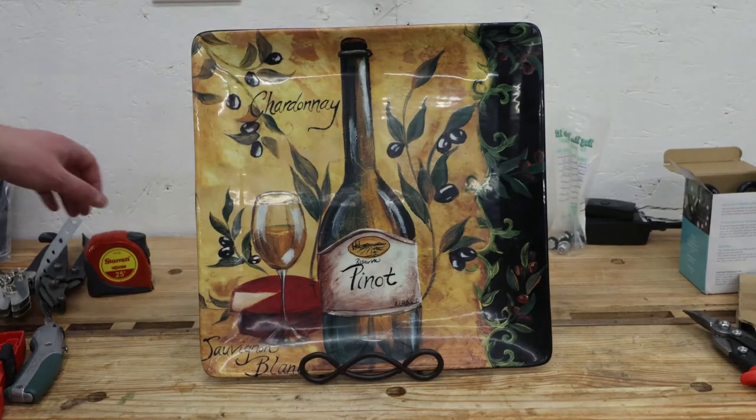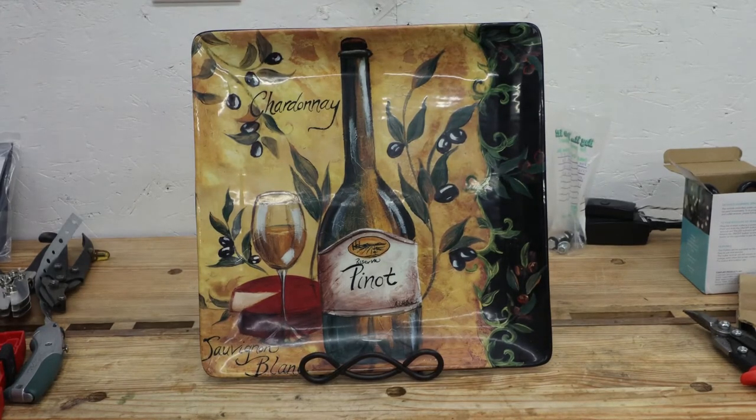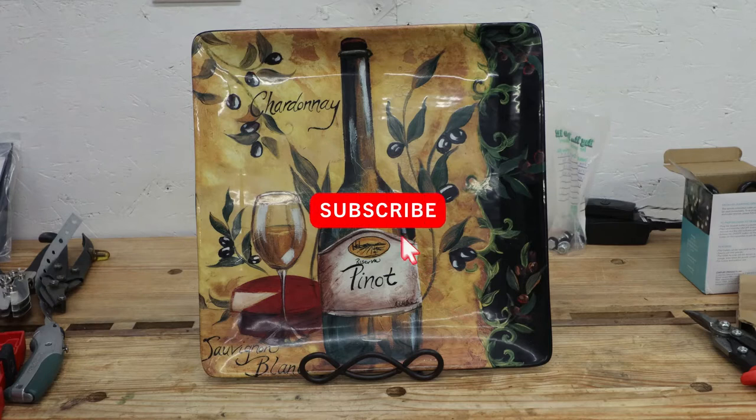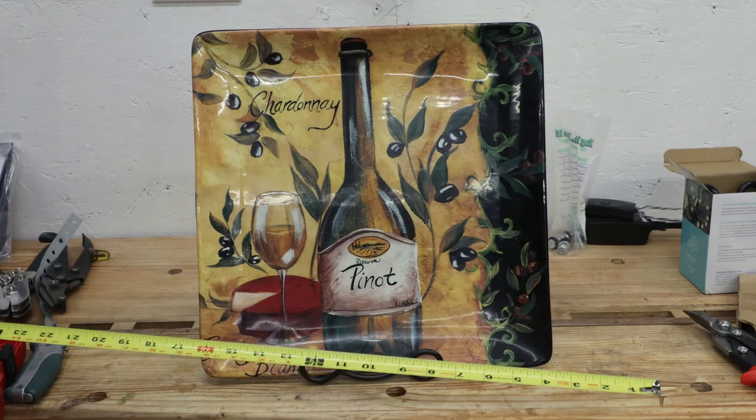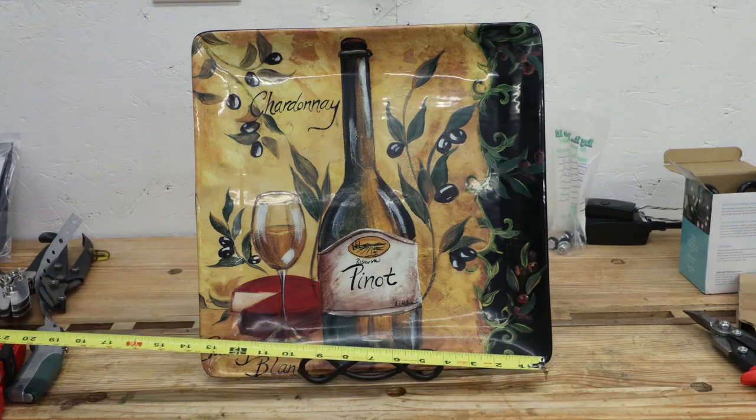In this short video, I'll be showing you how to mount a large plate or platter on a wall for display. This particular plate is about 14 inches by 14 inches and weighs 4 pounds, which is too big for the spring-type plate hangers you usually see.